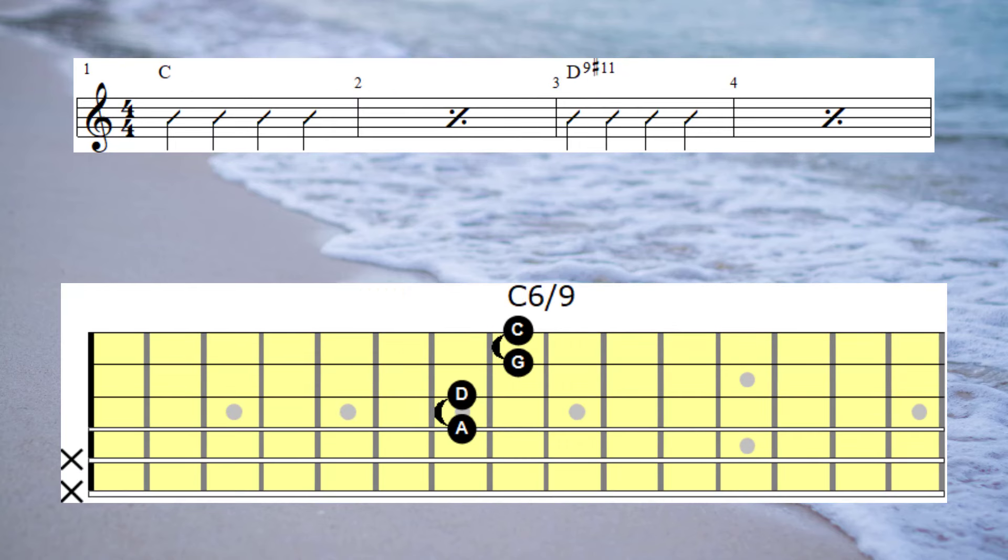Here's another example where I'm using augmented chords to create interest and movement. And once again we're playing over the chord progression for the first 8 bars of A-train.